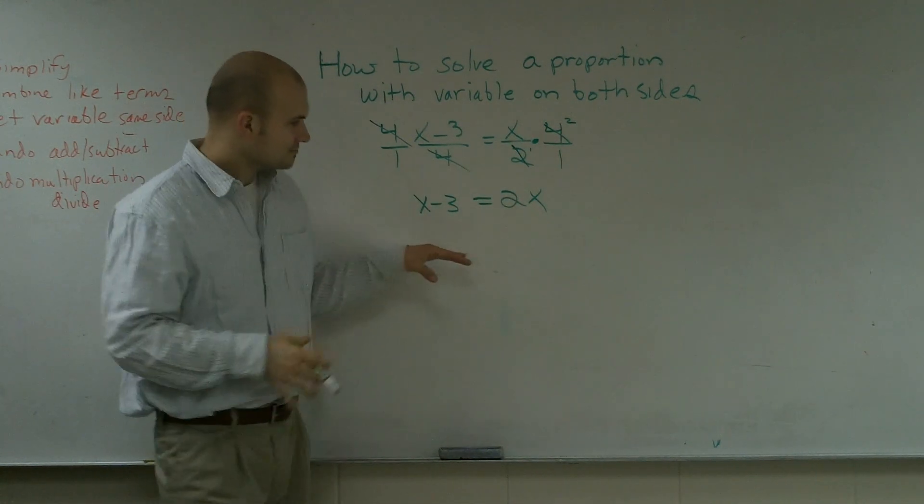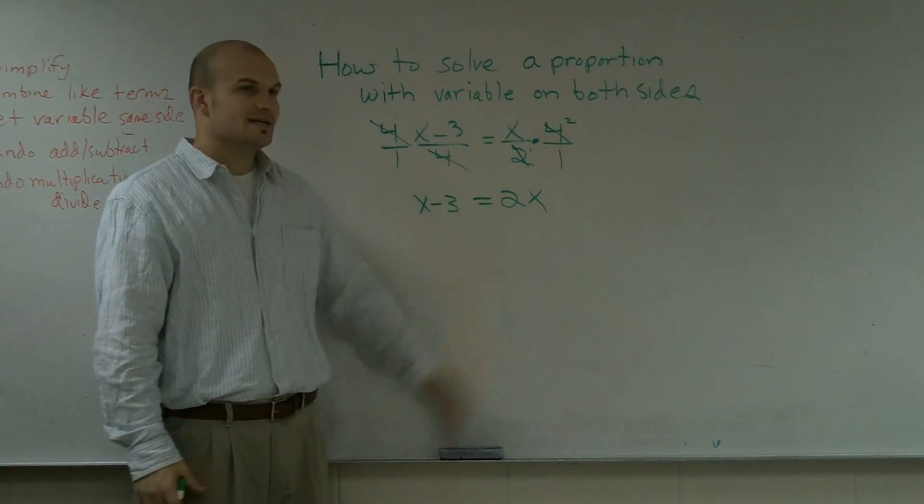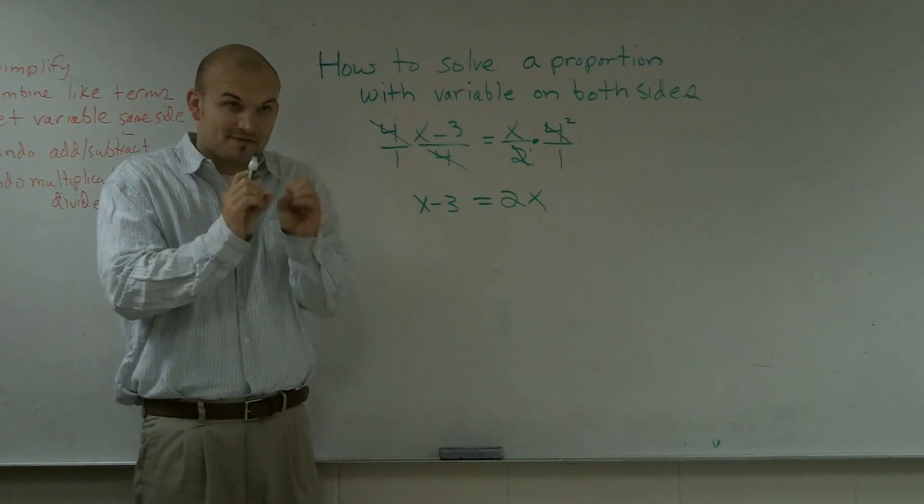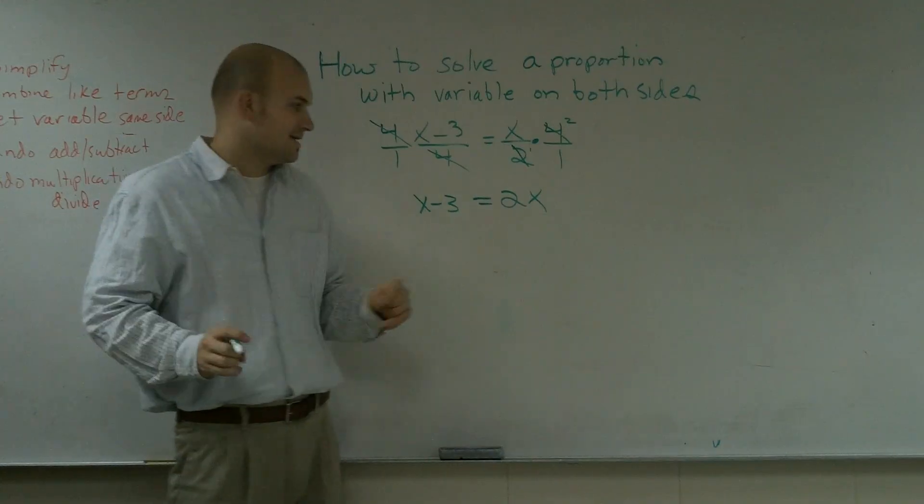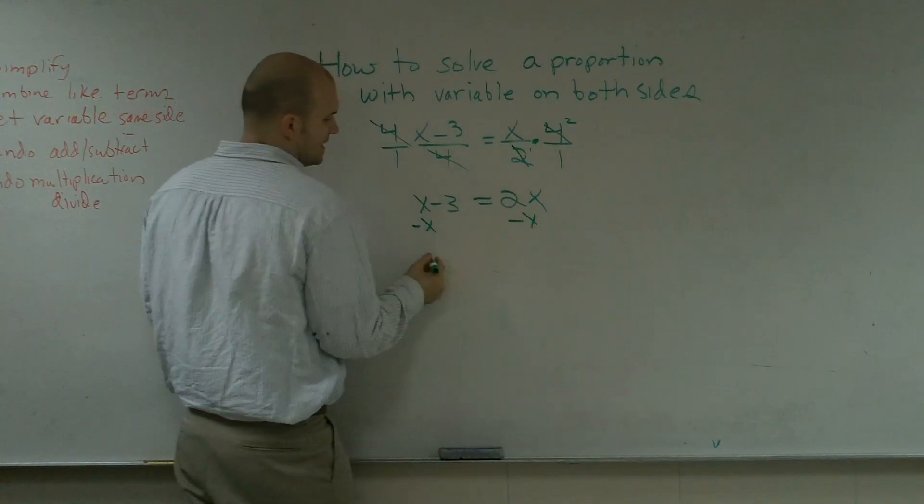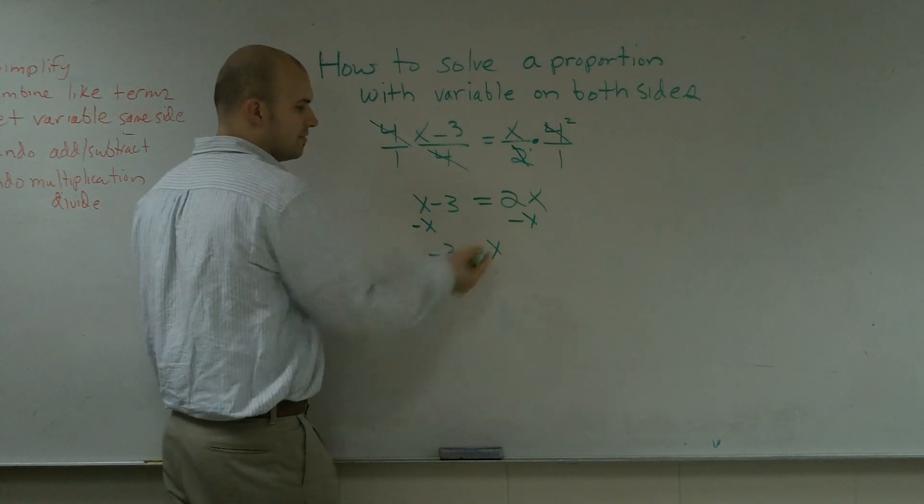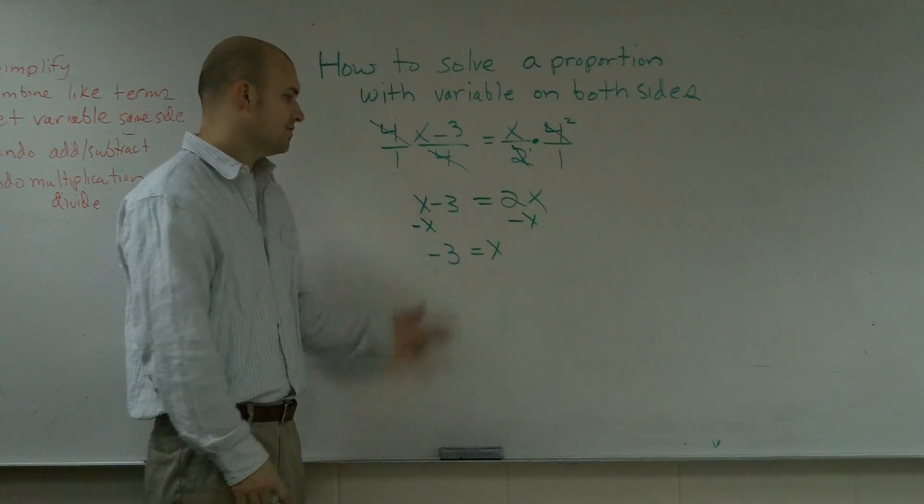So now, I have a variable on both sides, and I need to get the variables on one side. And I notice it's going to be a lot easier if I subtract this x here, and I get negative three equals one x, or what we'd just like to write as x. So therefore, x equals negative three. So that's how you solve a proportion with the variable on both sides.